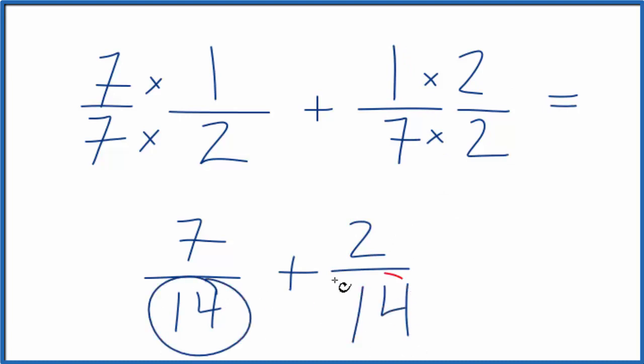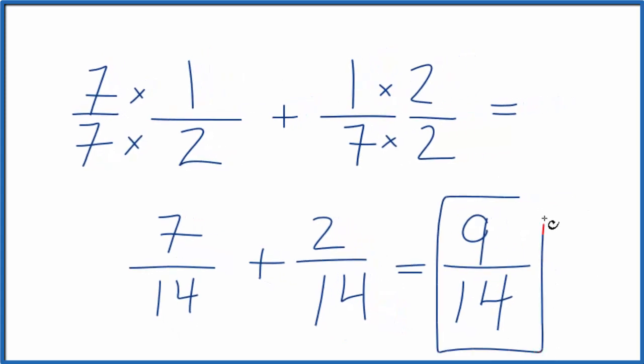Now we just add the numerators. Seven plus two, and we get—so one-half plus one-seventh that gives us nine-fourteenths.